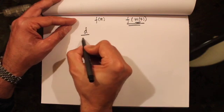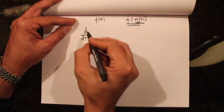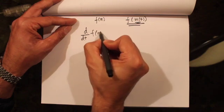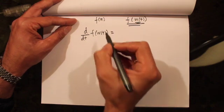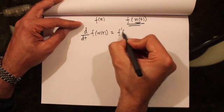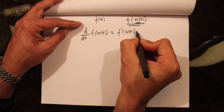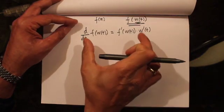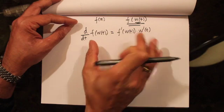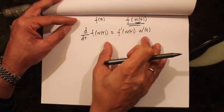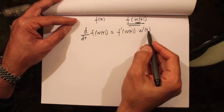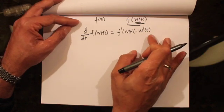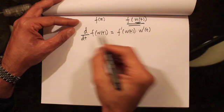We would get d/dt of f(w(t)) is equal to f'(w(t)) times w'(t). This is basically applying the chain rule from our calculus class and assuming that w(t) is not a Brownian motion—it's basically a differentiable function in terms of...